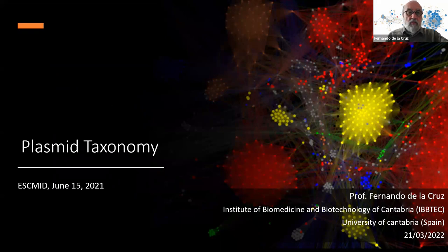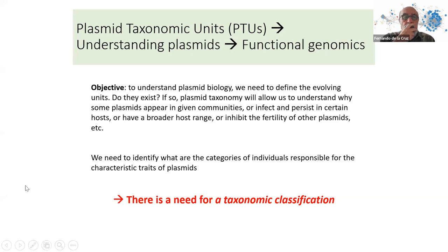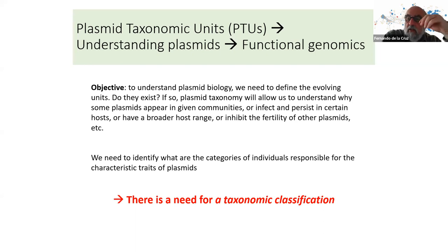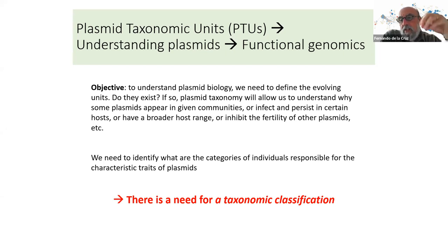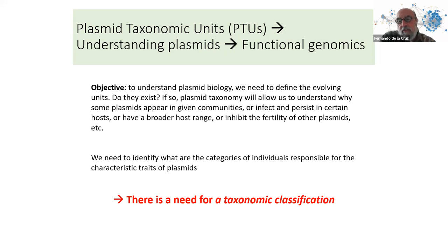I will talk about plasmid taxonomy, something we are developing right now but have already been working on for a few years. The idea is: if we want to understand plasmid function and plasmid biology, the first thing we need is to make clear what are the evolving units — in other words, what is the subject for evolution. In the same way as we don't analyze one giraffe to understand a species, what should we do about plasmids?